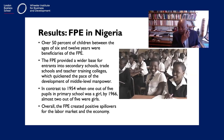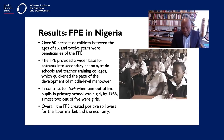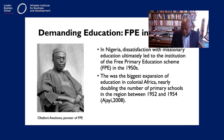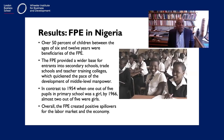But when they got into power, they enacted policies to break from colonial education policies. One great example is the free primary education policy by Chief Obafemi Awolowo in Western Nigeria. When he came to power in 1952, he enacted a free primary education scheme considered the biggest expansion of education in colonial Africa, nearly doubling the number of primary schools from 1952 to 1954. As a result, 50% of children aged six to twelve benefited, and girls' education benefited massively.